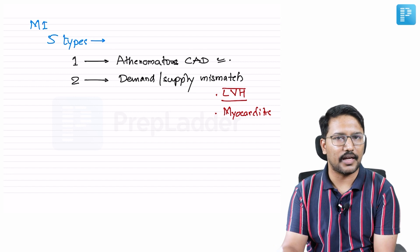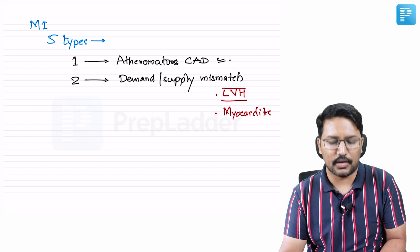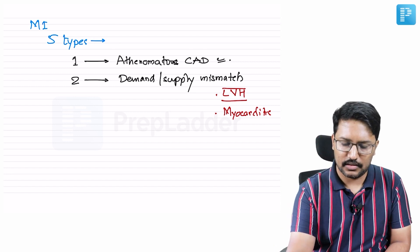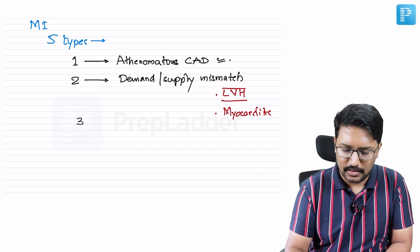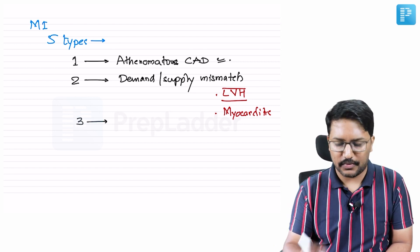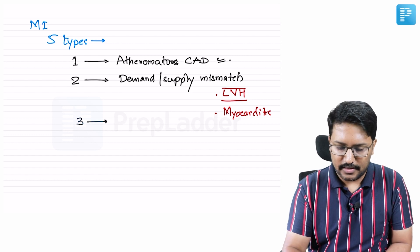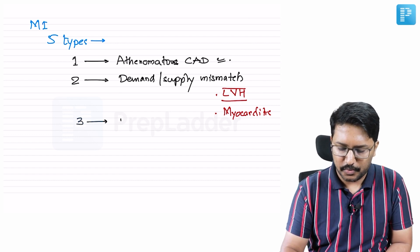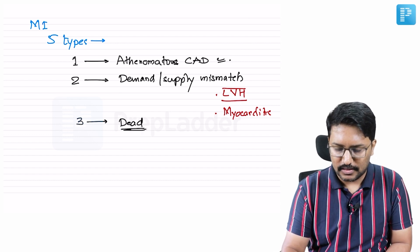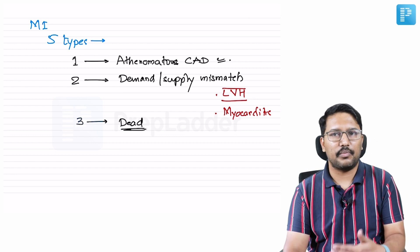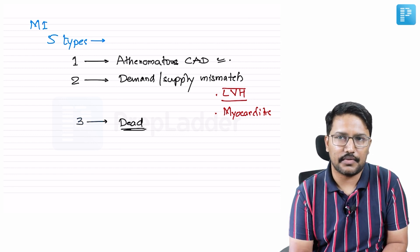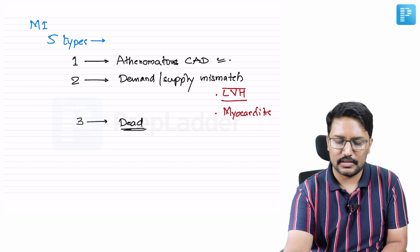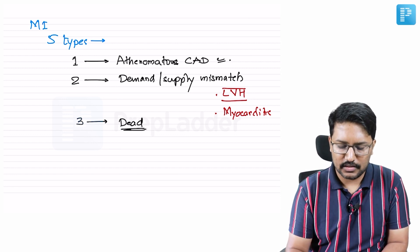Type 3 myocardial infarction is where the patient has died of a suspected MI. The patient is already dead and the circumstances of death make you think it could have been a case of myocardial infarction — that is called Type 3 MI.